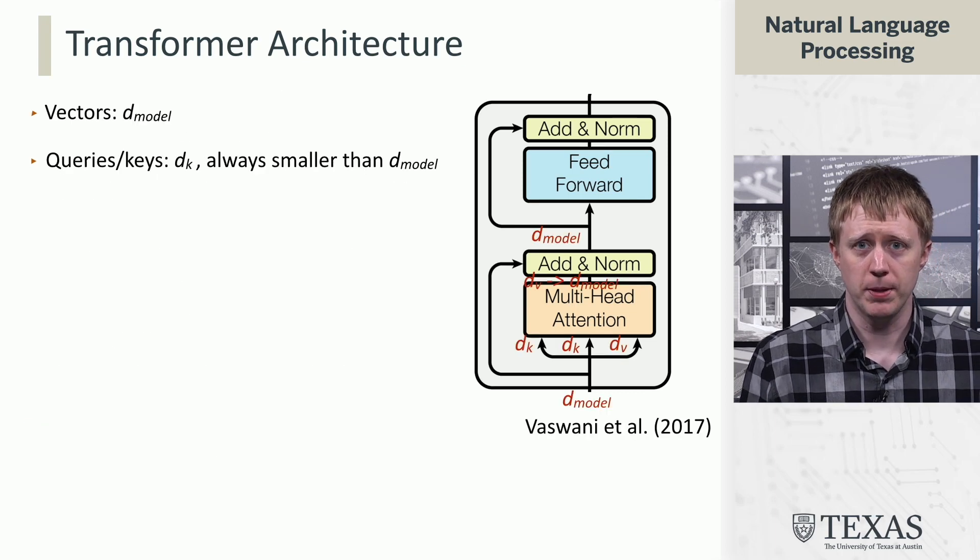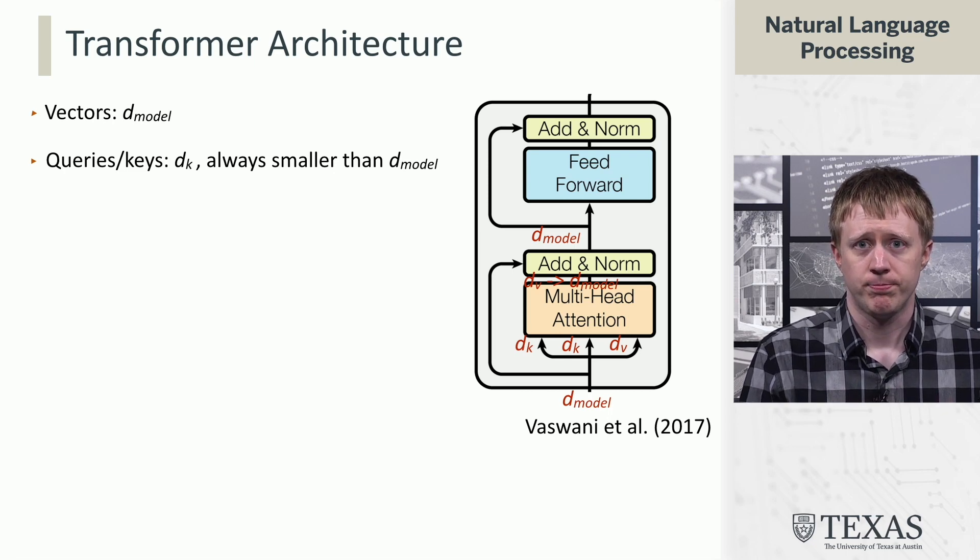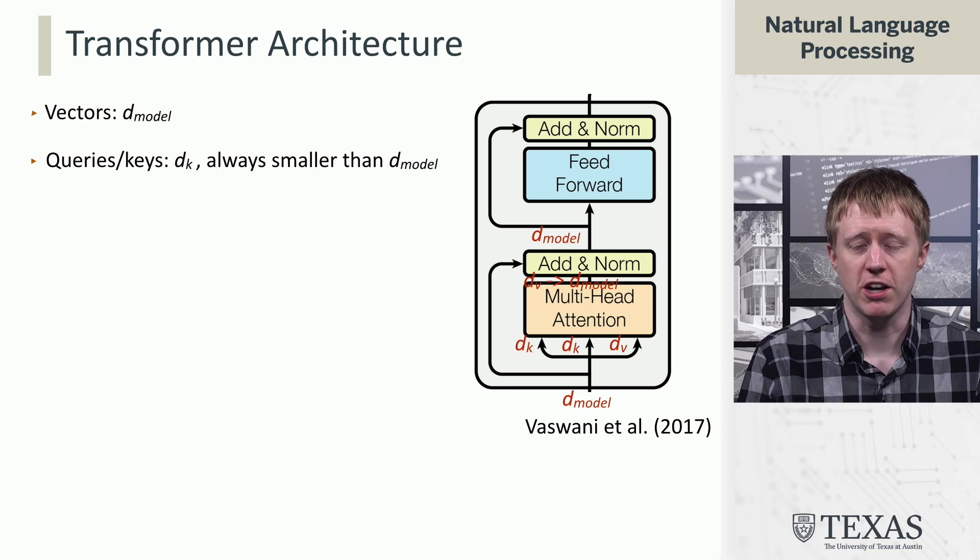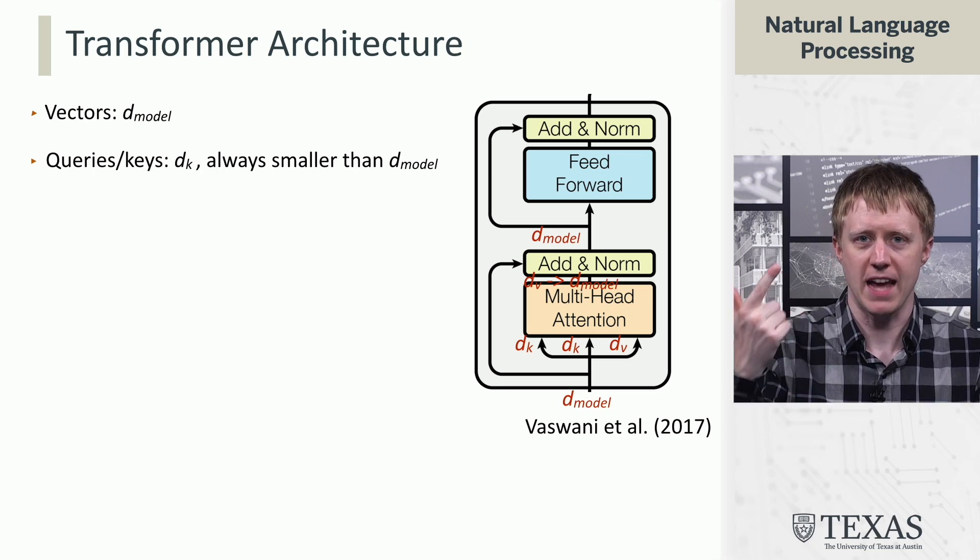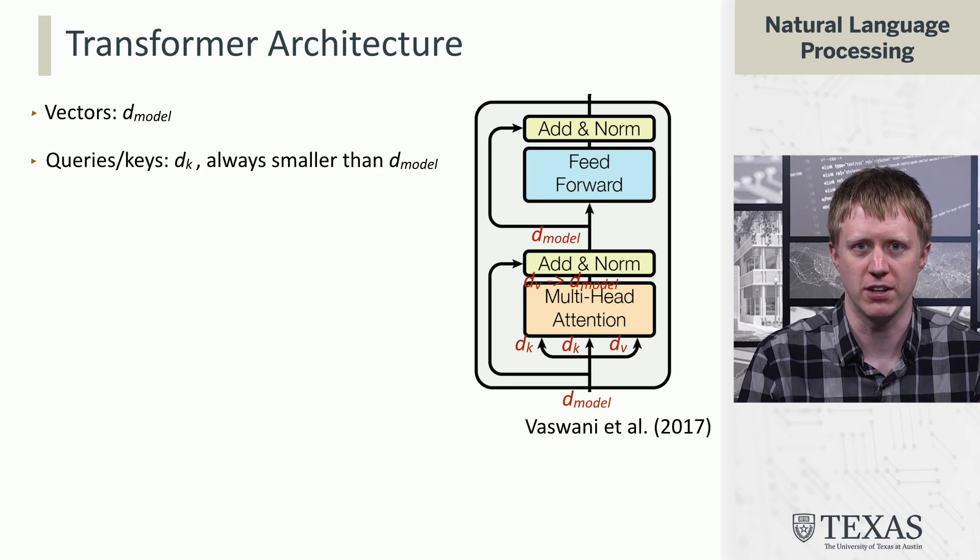All right, let's talk a little bit about the vector dimensions of everything here because this is pretty important if you want to understand how transformers are implemented. So, the inputs are going to be a dimension we call D model, and this is also going to be the output of the whole layer, and this is sort of, in some sense, the native dimension of this architecture.